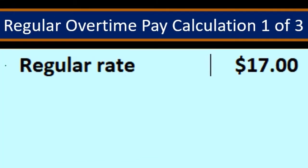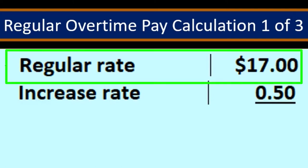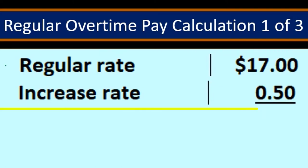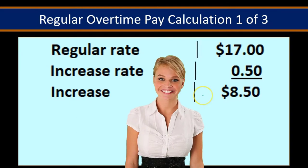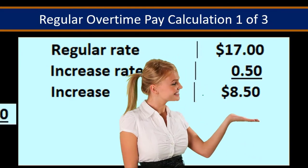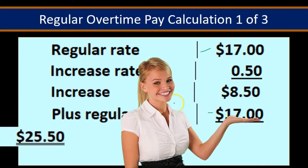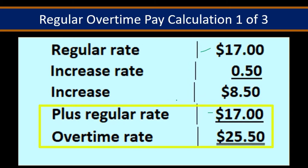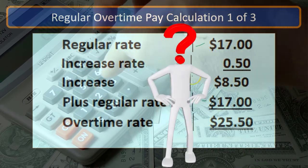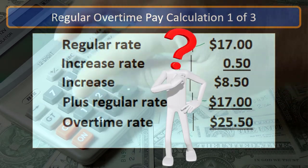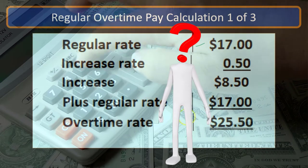So if we had a regular pay of $17, time and a half basically means we're going to get a 50% raise for any hours that are overtime. That means we get an $8.50 raise — which is $17 times 0.5 or 50% — so $8.50 added to the original $17 means our overtime rate is $25.50. This is similar to calculating a 50% tip: you add 50% of the original amount to itself to get the total.